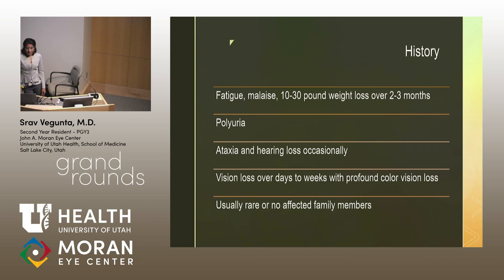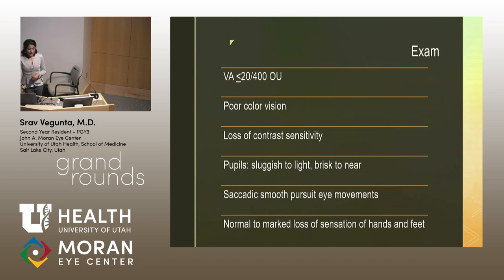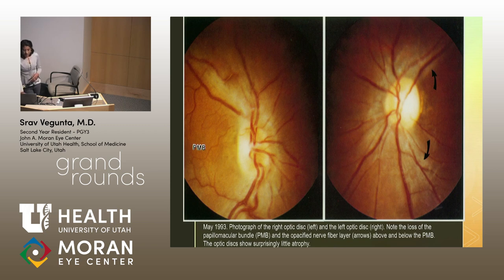He found that these patients presented with weight loss, fatigue, ataxia, and hearing loss. The vision loss occurred usually over days to weeks with profound color vision loss. Usually no affected family members with optic neuropathy were identified. Visual acuity was less than 20/400. Contrast sensitivity was affected, pupils were sluggish and reacted briskly to near stimulation but not light. Psychotic smooth pursuit eye movements were an issue, and patients lost sensation in hands and feet in a stocking-glove pattern.